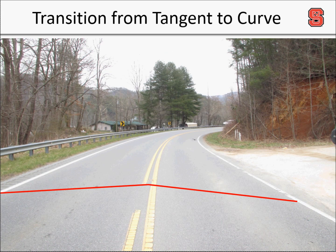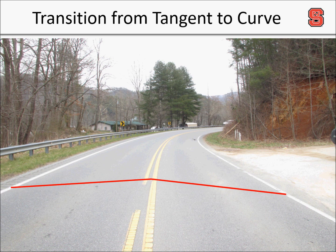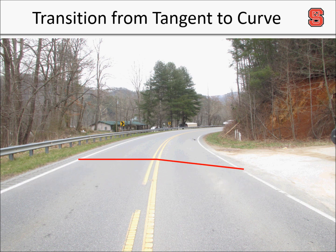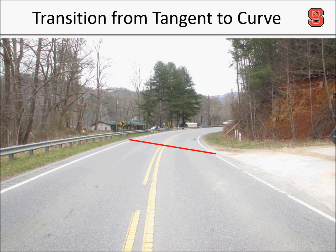Another important factor for a highway designer is how the transition from normal crown to full superelevation is made. The roadway should be designed in a manner which allows a vehicle to make a smooth transition from the normal crown on the tangent to the superelevation present on the curve.